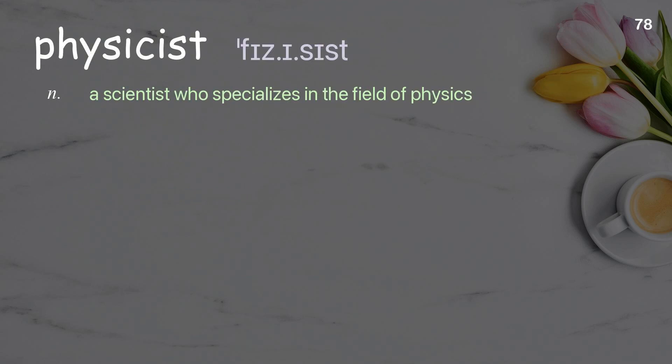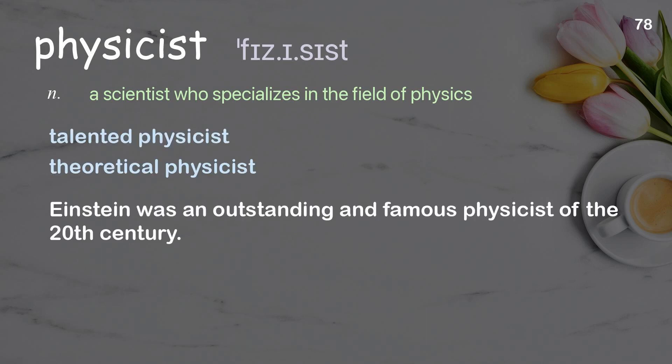Physicist: A scientist who specializes in the field of physics. Examples: Talented physicist, theoretical physicist. Einstein was an outstanding and famous physicist of the 20th century.